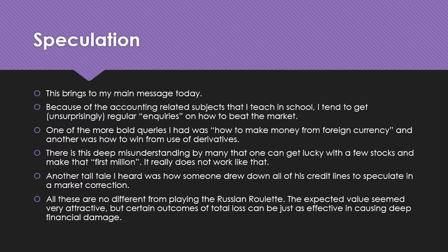All these attempts to beat the market or get rich quick are no different from playing Russian roulette. The expected values seem very attractive. Six contestants go on stage, five walk away looking incredibly smart and intelligent, and one lies on the floor dead. While the expected value seems very attractive, certain outcomes of total loss can be just as effective in causing deep financial damage. In the case of Russian roulette, that is the permanent loss of life. We can't just make decisions based on expected values — it doesn't work that way.